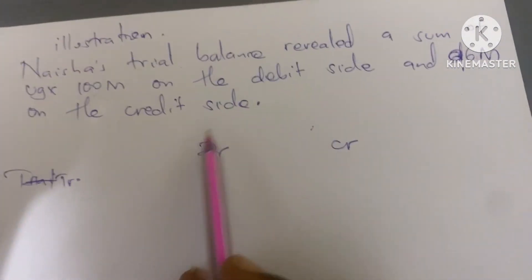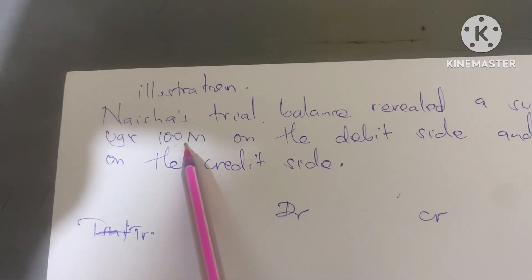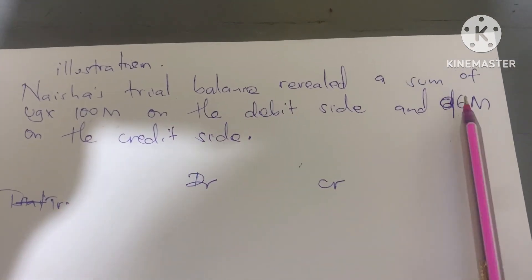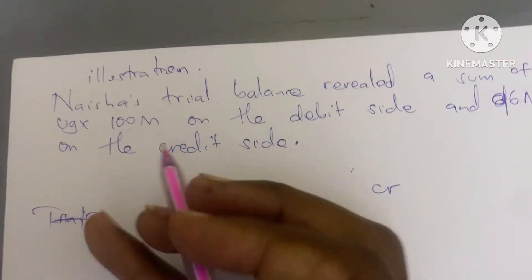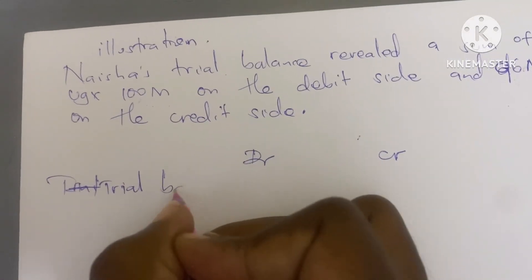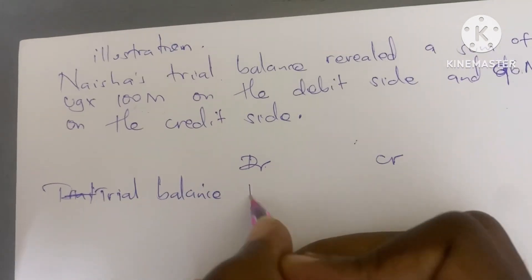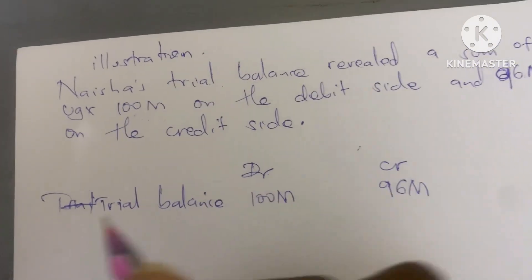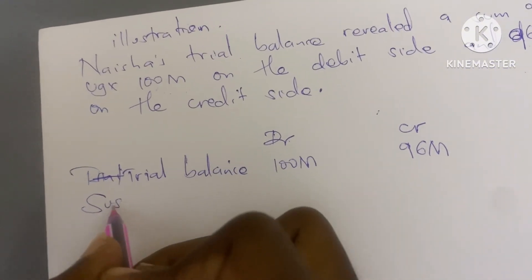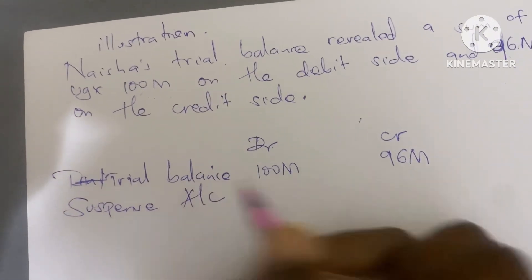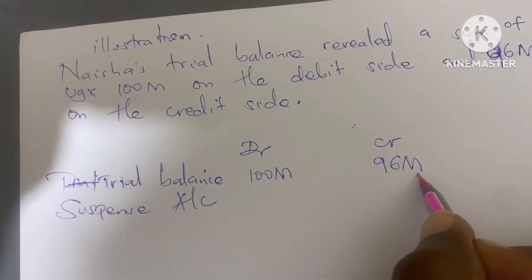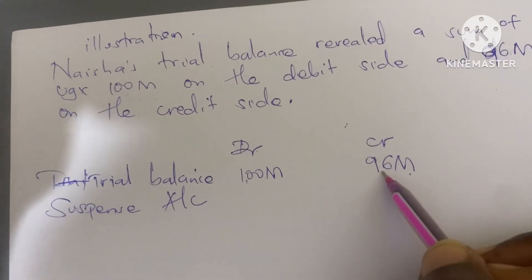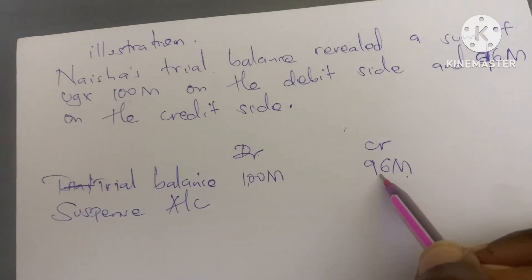So the introduction of the suspense account in Nation's books is going to be as follows: since the credit side is less than the debit side, the suspense account is going to be introduced on the lower side, which is the credit side. According to the trial balance, the debit side has 100M and the credit side has 96M.